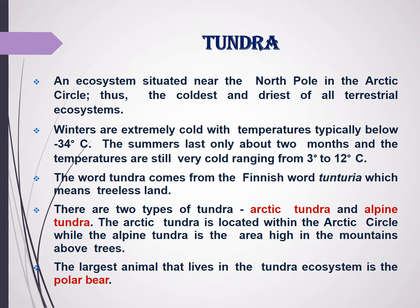The word tundra comes from the Finnish word tunturia, which means the treeless land. There are two types of tundra: arctic tundra and alpine tundra. The arctic tundra is located in the arctic circle, and alpine tundra refers to areas high in the mountains above the tree line.